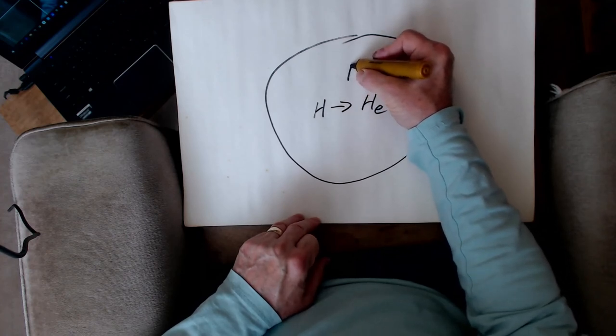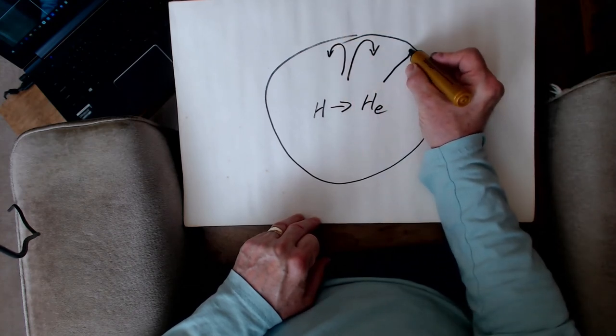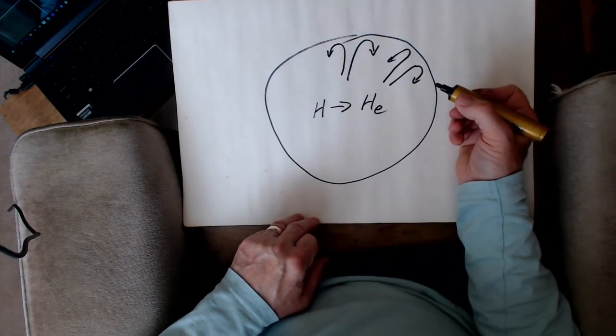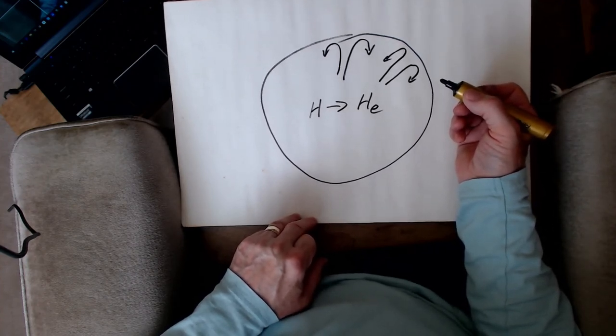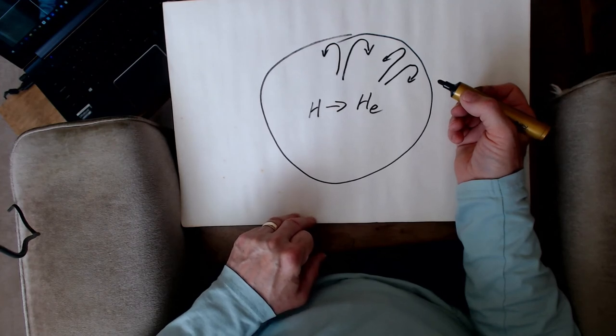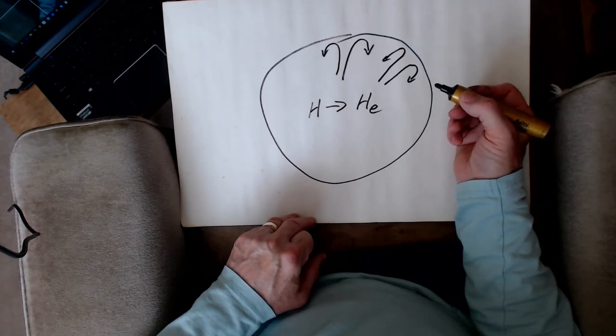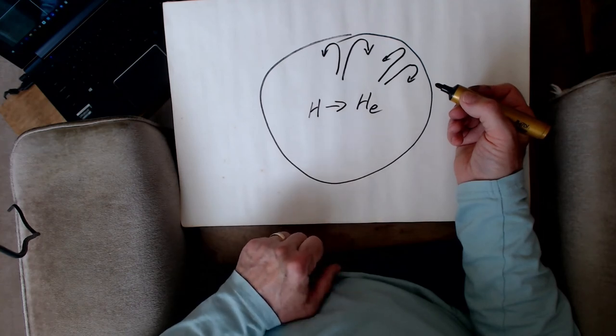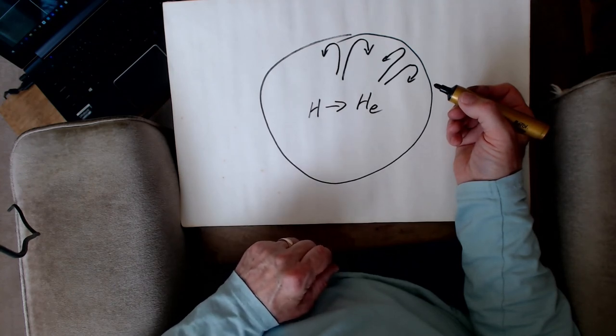And so actually what we can find is that we have convection currents going on over the surface of the sun just as we get elsewhere in any fluid, and a gas is a fluid. Any fluid that has temperature differences within it. So in fact the surface of the sun is not featureless. You'll have all heard I'm sure of black spots on the sun. Well black spots are simply areas of the sun's surface that aren't as hot as the bit of surface nearby, and so they come up looking dark against the background of everything else.